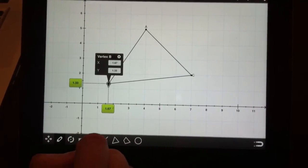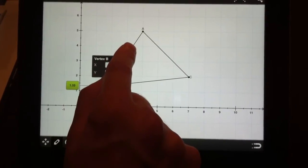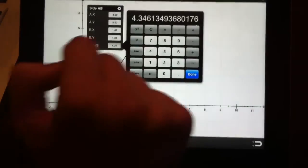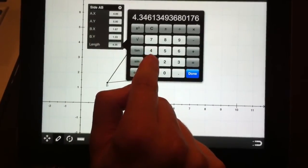In the same way we can change the length of the side AB. Let's make it a rational number. For example, a square root of 11.